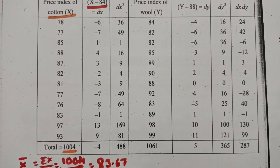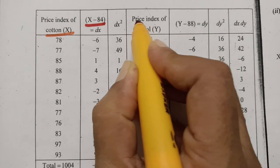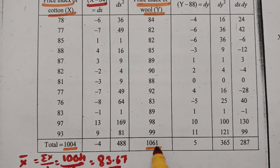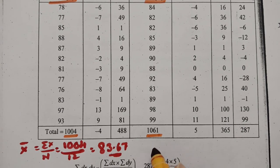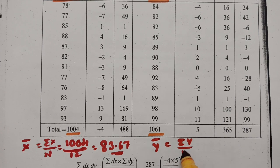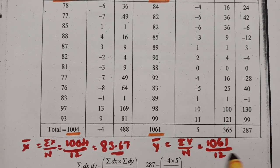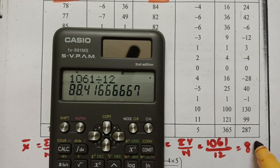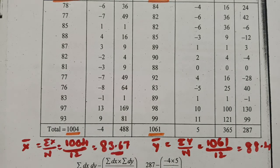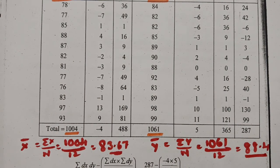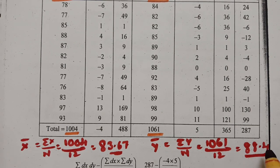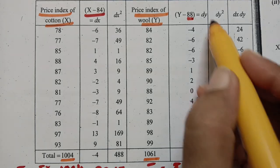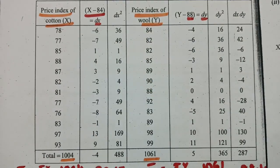The next column is the price index of wool, named y. The total is 1061, so ȳ = 1061/12 = 88.42. This is also a fraction, so we use the assumed mean formula. The nearest whole number is 88, so the assumed mean for y is 88. We subtract 88 from each y value to get dy: 84 − 88 = −4, 82 − 88 = −6, 82 − 88 = −6, 85 − 88 = −3, and so on.